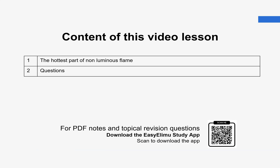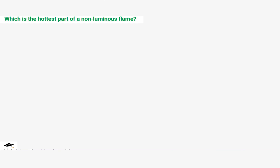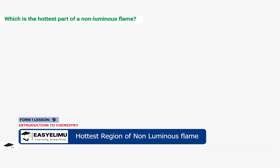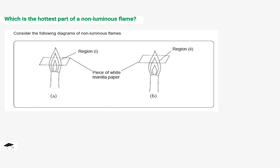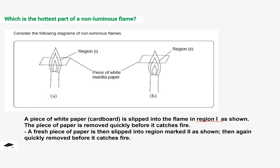We are going to look at the hottest part of the non-luminous flame and answer a few questions. First, we'll discuss an experiment to show which part is the hottest. The non-luminous flame was lit, and a piece of paper was slipped into region one very quickly, then removed before catching fire. Then another piece of paper was slipped into region two and again removed quickly before it caught fire.